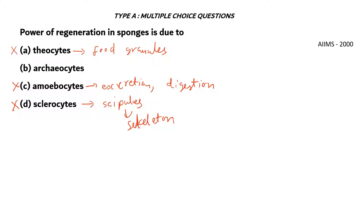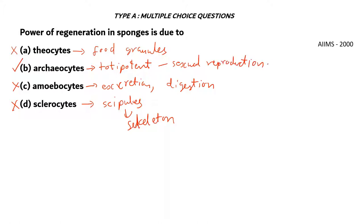The right answer is archaeocytes. These are totipotent cells, which means they can grow and differentiate into any other type of cell. They are used for sexual reproduction and regeneration — it's kind of like our germ cells in the human body, used for sexual reproduction and nutrient transport.